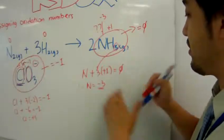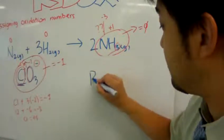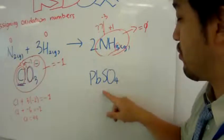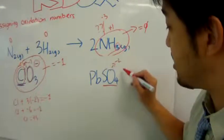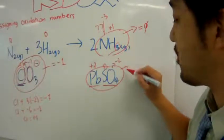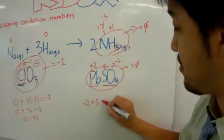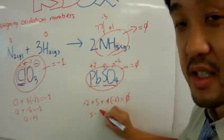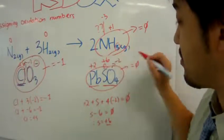Another example — let's find the oxidation number of sulfur in lead sulfate PbSO₄. We know the oxidation number for oxygen is minus two, the charge of sulfate is minus two, and so lead must be plus two. The entire salt has an oxidation number of zero. So: 2 + S + 4×(−2) = 0, giving S − 6 = 0, therefore sulfur has an oxidation number of plus six.